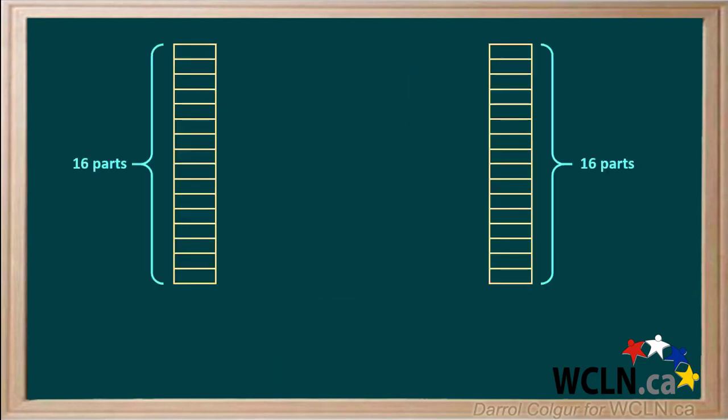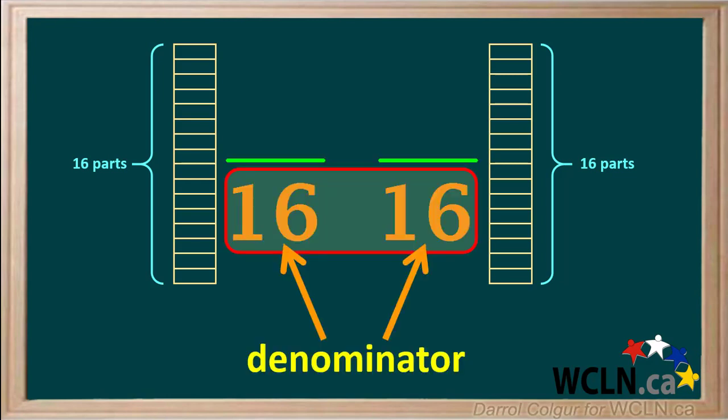Now we'll divide each of the two rectangles into 16 parts. So fractions based on these will both have a denominator of 16. We can also say they have a common denominator of 16. Because they have a common denominator, it's easy to compare fractions based on these.